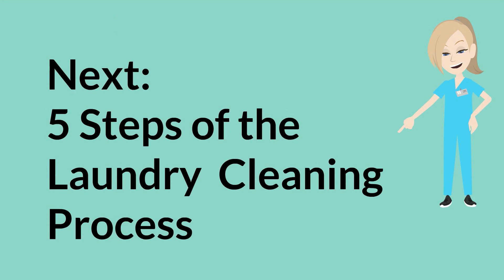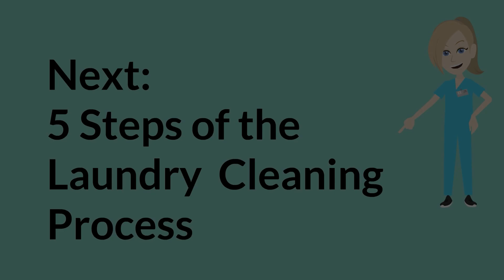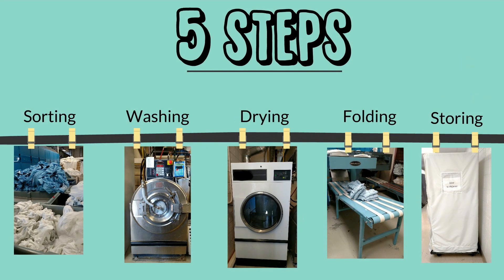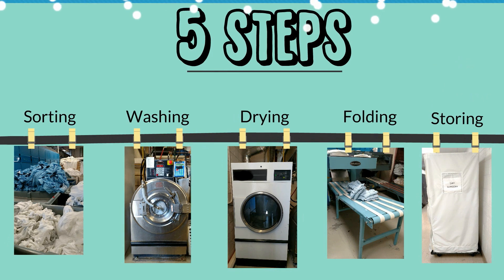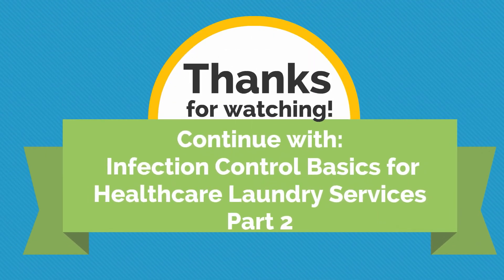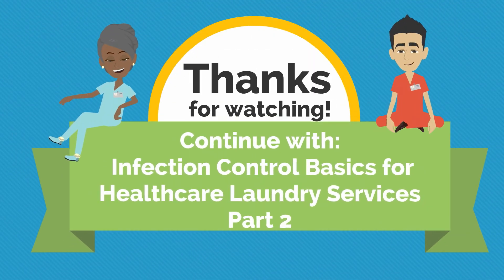There are five primary steps in the laundry cleaning process: sorting, washing, drying, folding, and storing. This combination of steps, when followed properly, makes contaminated items safe for reuse. Now that you have an overview of the complete laundering process, watch the next video for details on how to properly follow each step.